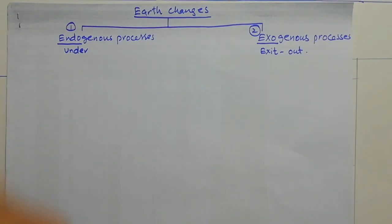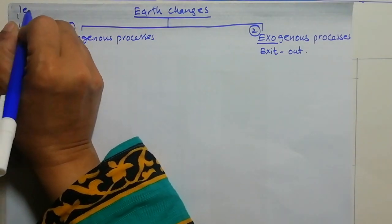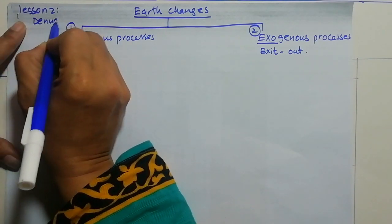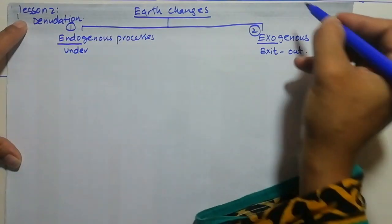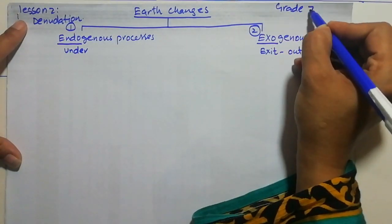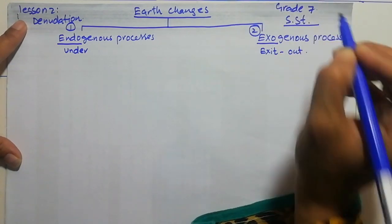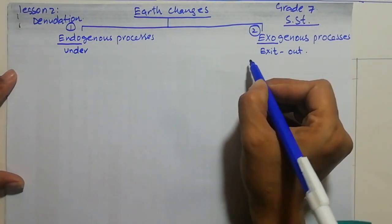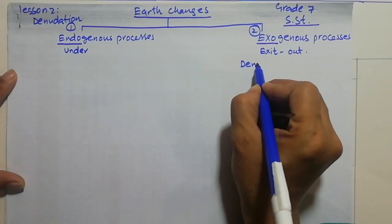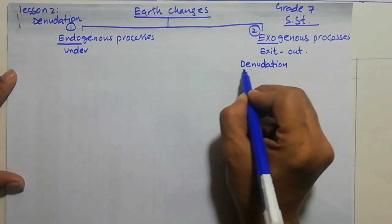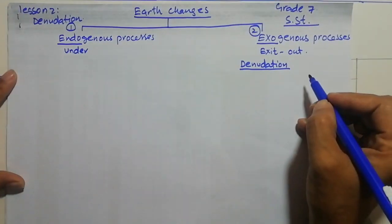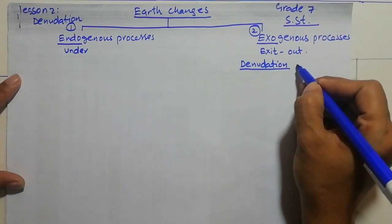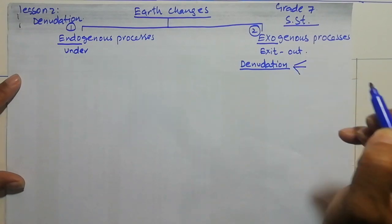In chapter number two — lesson two — that is Denudation, Grade 7 SST. Here in exogenous processes we find a special process that is denudation. Denudation is the whole concept which is actually explained in this chapter.